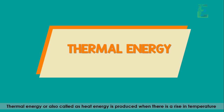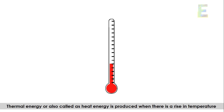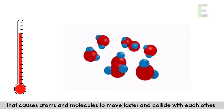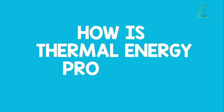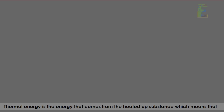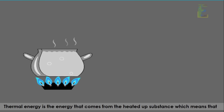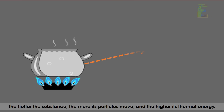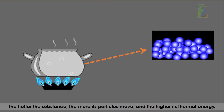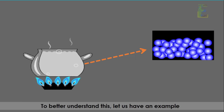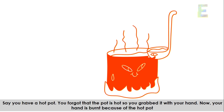The first type of energy we are going to discuss is thermal energy. Thermal energy, also called heat energy, is produced when there is a rise in temperature that causes atoms and molecules to move faster and collide with each other. Thermal energy is the energy that comes from a heated substance — the hotter the substance, the more its particles move and the higher its thermal energy.